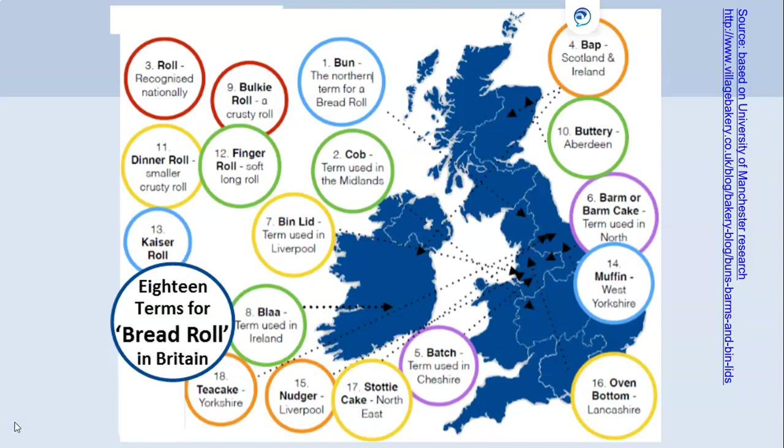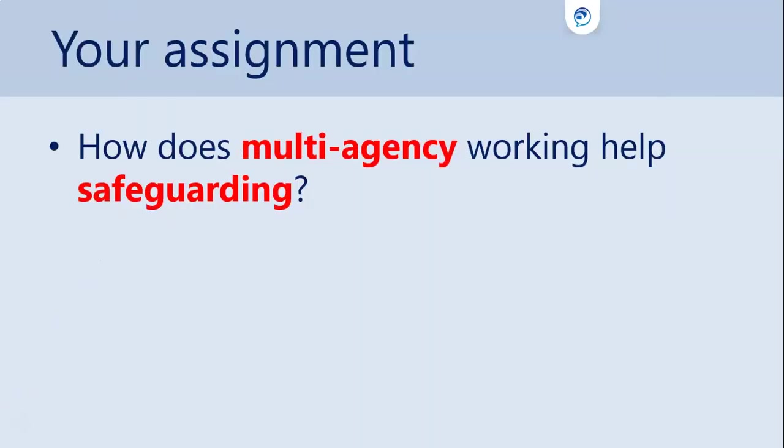If we were to do a search just for buns, I would potentially miss out a lot of relevant information because I haven't used the correct keyword to describe my topic. So, let's go back to our assignment brief. We have identified multi-agency and safeguarding as our key terms. But how else might the literature describe these concepts?